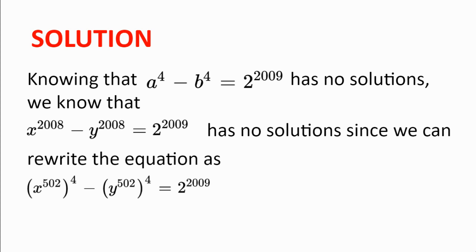We can use this fact to show that x to the power of 2008 minus y to the power of 2008 equal to 2 to the power of 2009 also has no solutions, since we can rewrite that equation as x to the power of 502, all to the power of 4, minus y to the power of 502, all to the power of 4, equal to 2 to the power of 2009, where a equals x to the power of 502 and b equals y to the power of 502.